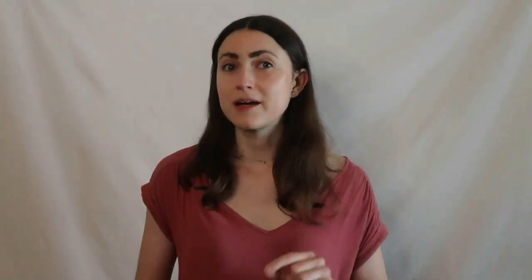After analytic problem framing, the topic we cover next in the CAP study plan is Business Problem Framing. If you do business problem framing properly, you're aligning the team through collaborative structuring. Here's a question on that topic: Which of the following is the most important information to obtain in an initial client meeting? A) Timeline and implementation plan; B) Analytical model; C) Business issue and project goal; or D) Available budget. The correct answer is C — we want to develop our understanding of the business issue and project goal. This will give us a sound foundation on which to build the project.